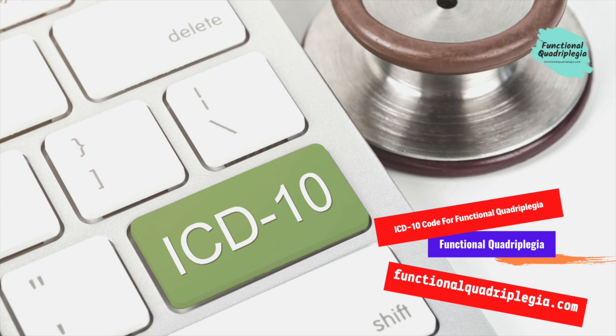The diagnosis code for Functional Quadriplegia is R53.2. It is a billable diagnosis code effective for HIPAA-covered transactions, covering a condition that involves a partial or complete inability to move.